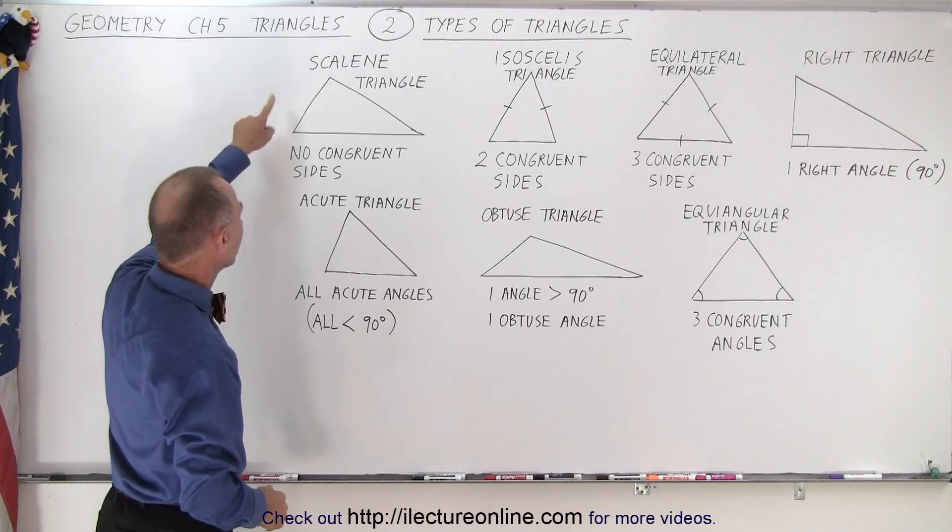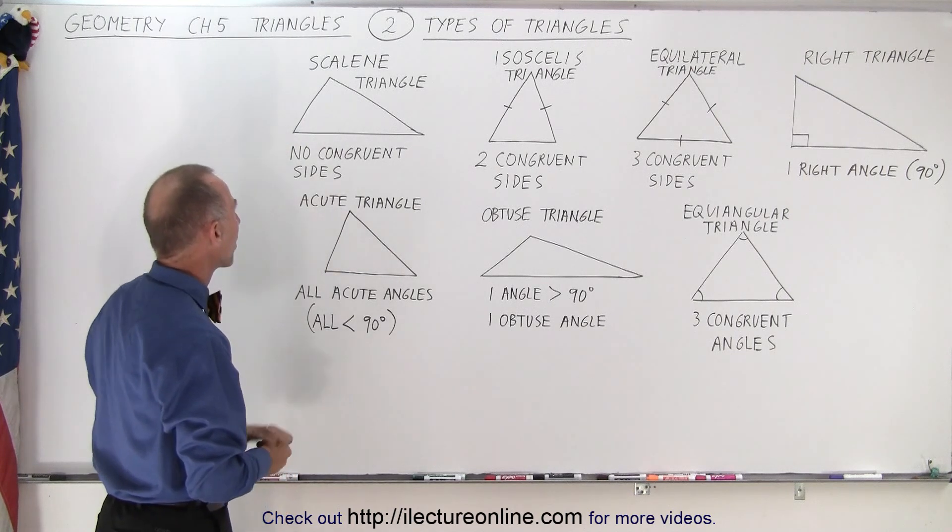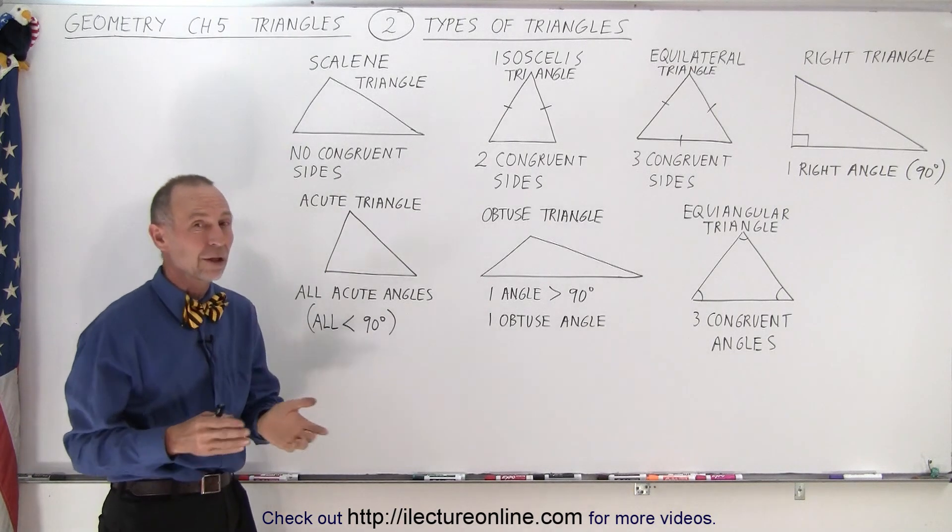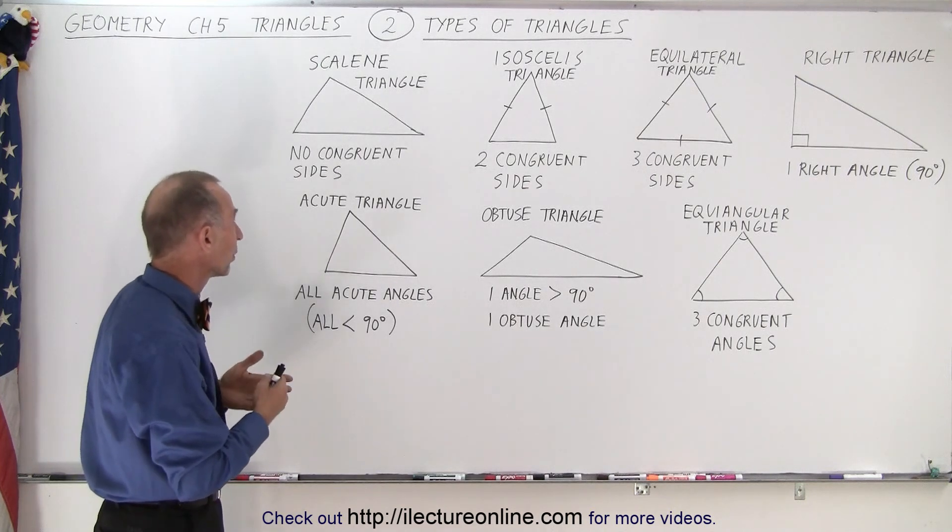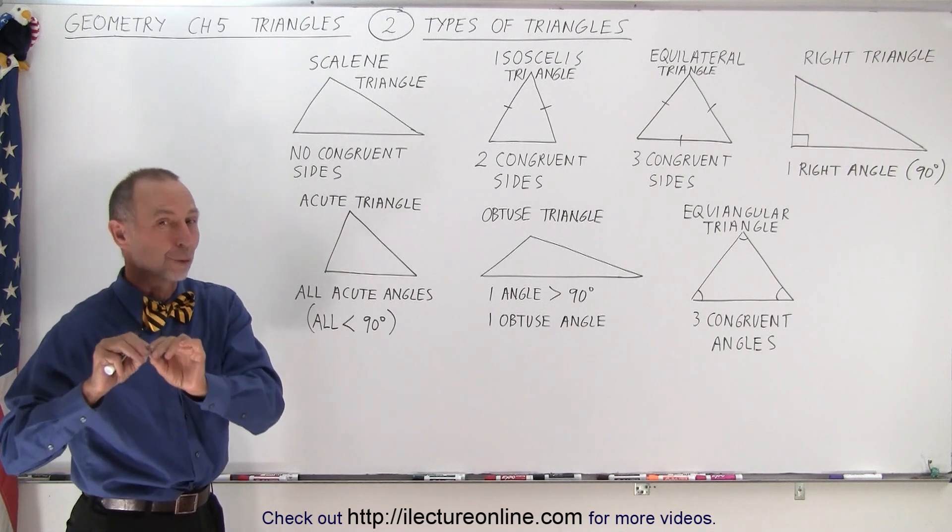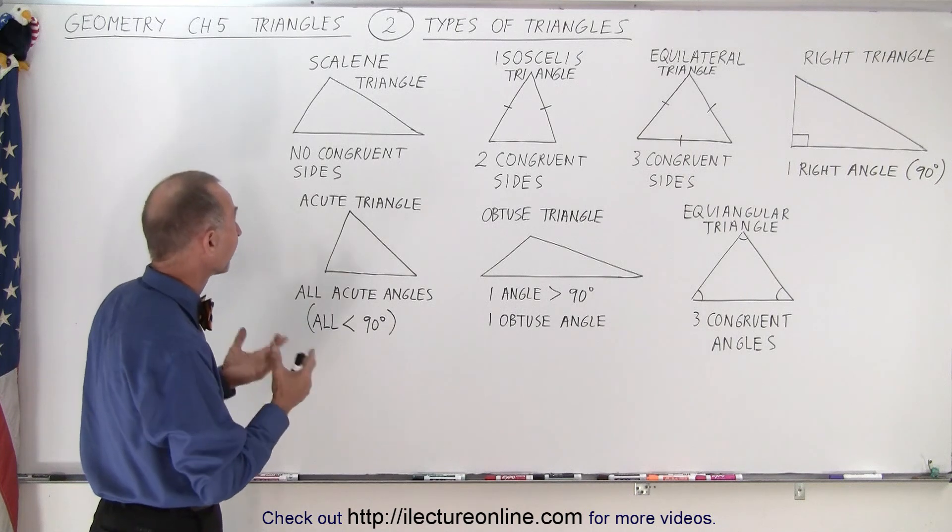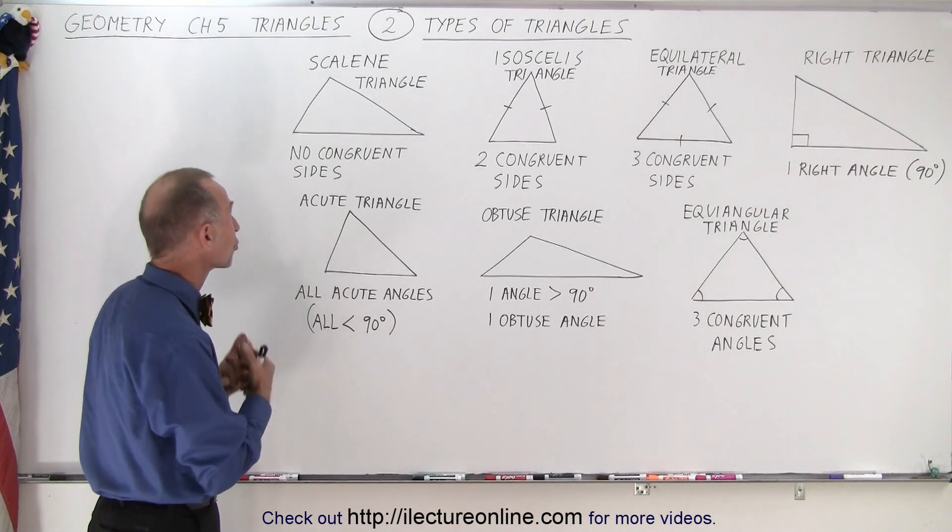But first, let's look at our first one. This is called a scalene triangle. That simply means that none of the sides are congruent to one another, and therefore they call that a scalene triangle.